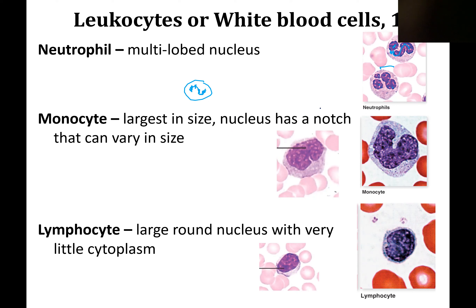Monocytes are the biggest. They have a notch in their nucleus — sometimes the notch is deep, like we see here, and sometimes it's fairly shallow. If you compare the size of the erythrocytes next to them to the size of the monocyte, you can usually fit four to five erythrocytes in the same amount of space. That's what is meant by big.